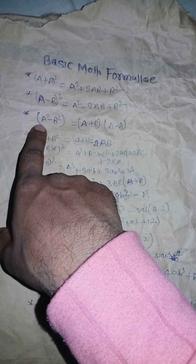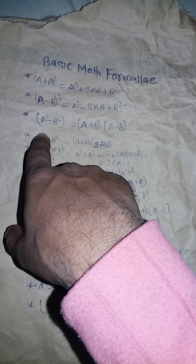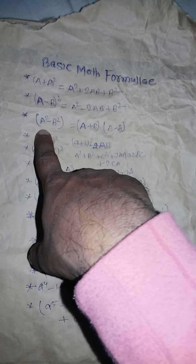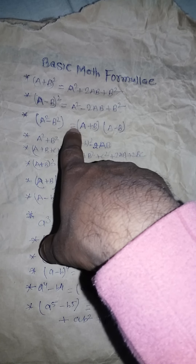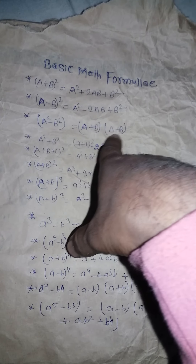Third one: a square minus b square is equal to a plus b into a minus b.